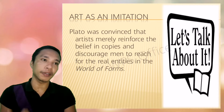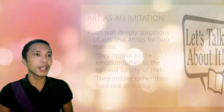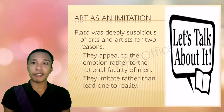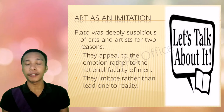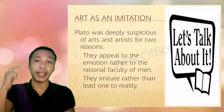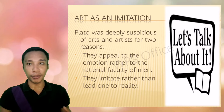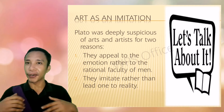Plato was convinced that artists merely reinforce the belief in copies and discourage men from reaching for the real entities in the world of forms. According to Plato, there are actually two worlds: the republic, where everything is just an imitation, and the world of forms. Plato was deeply suspicious of art and artists for two reasons. Number one, they appeal to emotion rather than to the rational faculty of men — our ability to think, which is the only thing that separates us from brute animals.